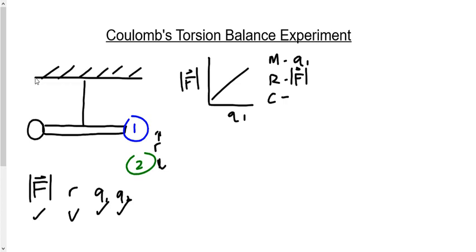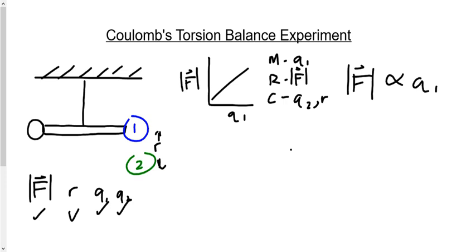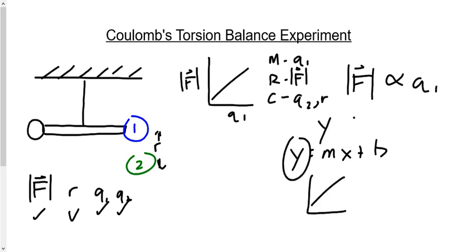Q2 and R are the control variables. If we change Q2 and Q1 simultaneously, we can't tell what caused the increase in F. Change one at a time. When Coulomb does this experiment, he gets: F is related to Q1. As Q1 increases, F increases; as Q1 decreases, F decreases. For a straight line graph y = mx + b, F equals the slope of the graph times Q1. So F and Q1 are directly related.